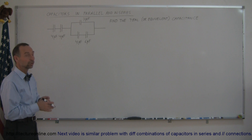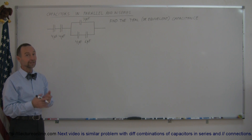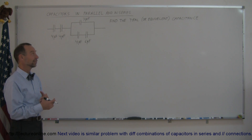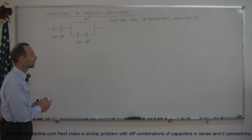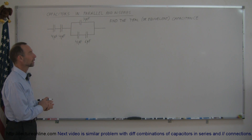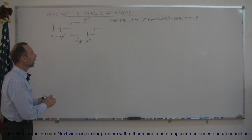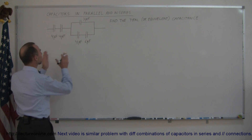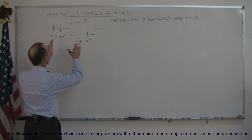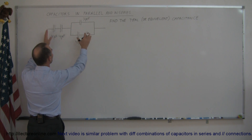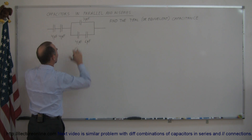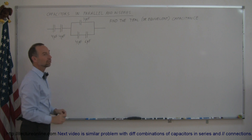When they say find the total or find the equivalent capacitance, it means exactly the same thing — it means what single capacitor could take the place of all these capacitors in this combination. That's why they call it the equivalent capacitance.